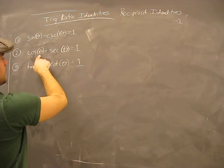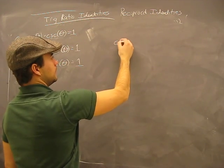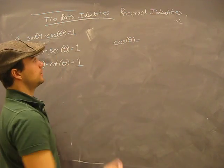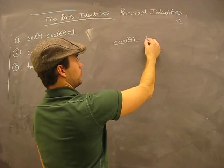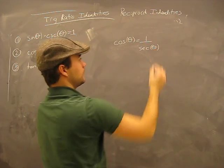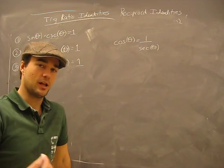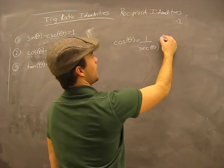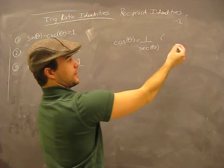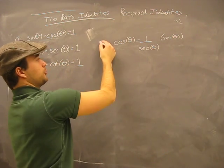Look at the second one: cosine theta times secant theta equals 1. We know that cosine theta, from our reciprocal identity, is the same as 1 over secant theta. Being the brilliant math students that we are, we realize we can isolate the 1 by multiplying out on both sides.